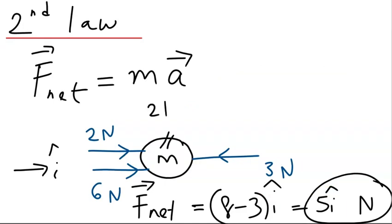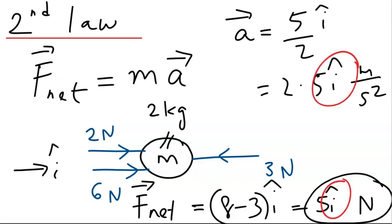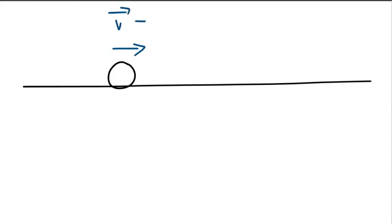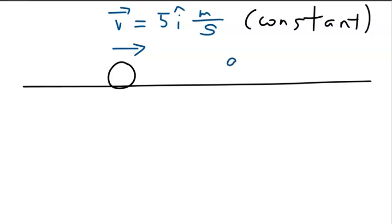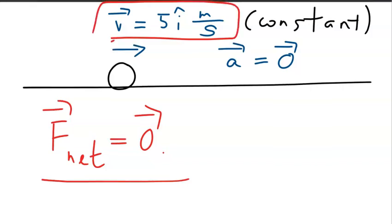If the mass is 2 kg, then the acceleration is 5 î divided by 2, which is 2.5 î meters per second squared. The direction of acceleration and the direction of net force are the same. So if an object is moving with a constant velocity of 5 î m/s, the acceleration is zero, which from Newton's second law implies the net force is also zero. This shows how Newton's first and second laws are related in a very intimate way.